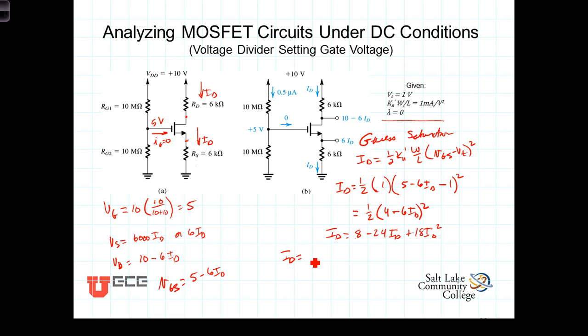We get that I_D can either equal 0.89 milliamps or I_D can equal 0.5 milliamps. Now I have to look at these and determine do either of these make sense? Let's look first at this 0.89 milliamps.